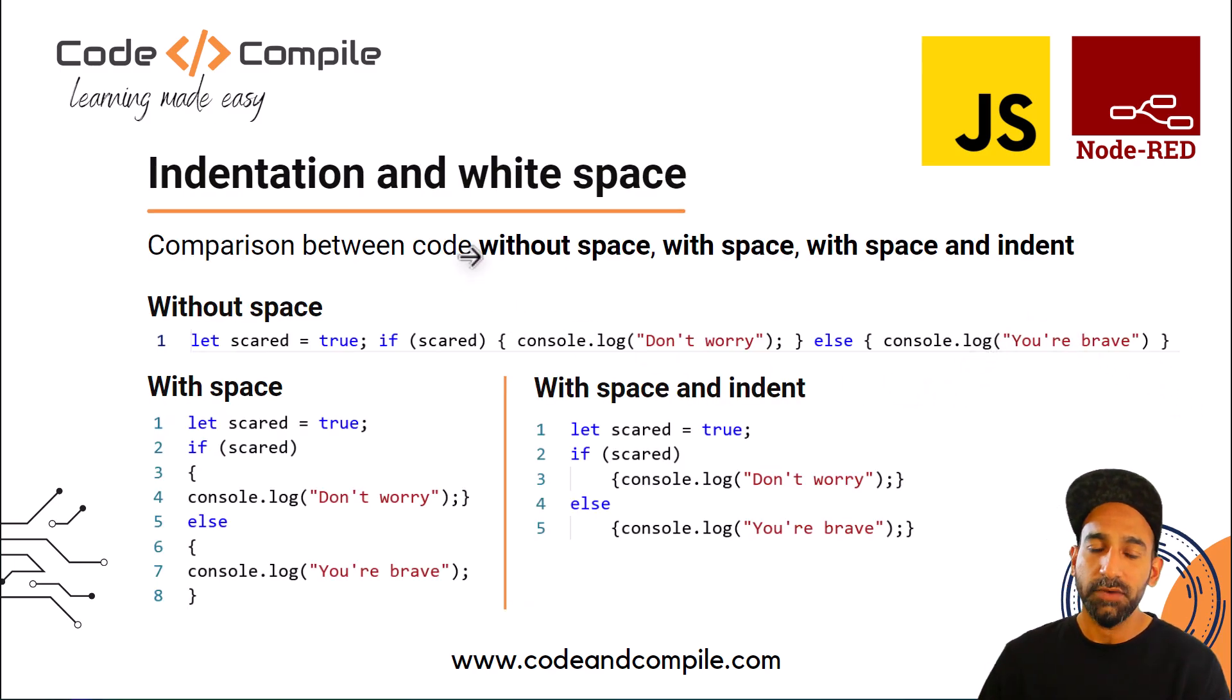Next is indentation and white spaces, which is also very important. If you don't add any spaces, this is one example how your code looks like. It's going to work, but it's not easy to read. Here you see without space, I declare a variable which is true, then use an if statement and log something.